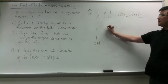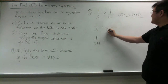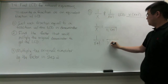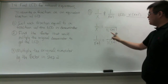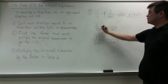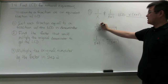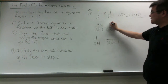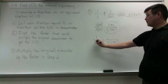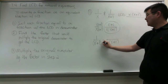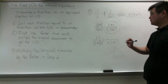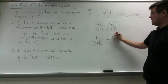In our next example, we set the fractions equal to the LCD in the denominator. We multiply this factor by x plus 1 to get the LCD, so we multiply the numerator by x plus 1 as well — and 1 times x plus 1 is x plus 1. Then for the other fraction, we multiply x plus 1 by x to get the common denominator, so we multiply the numerator by x as well — 1 times x is x.